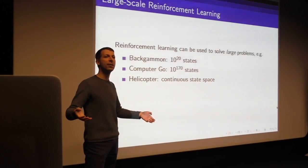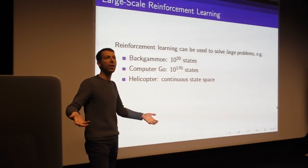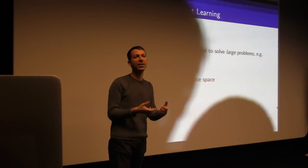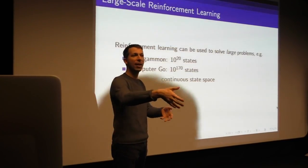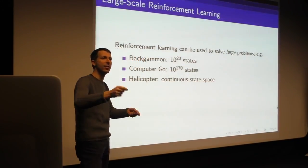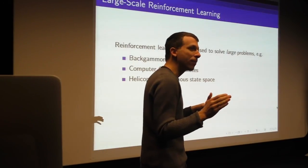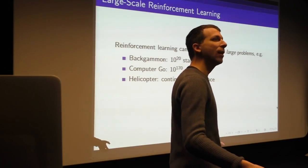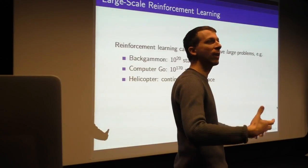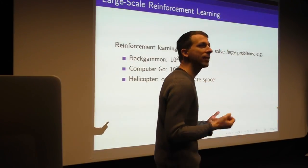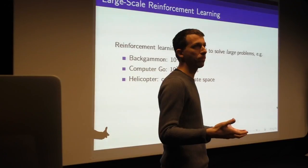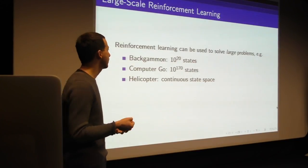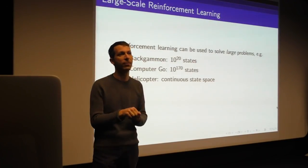Regardless of the size of the state space, we want methods that work — even with infinitely large state spaces. We build a function approximator that estimates the value of parts of the space we visit and generalizes across it, so we don't separately represent the value of being here versus one millimeter to the right. Nearby states should have similar values, and we want our value functions to understand that generalization.